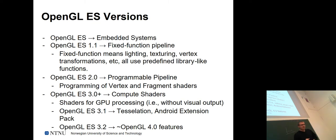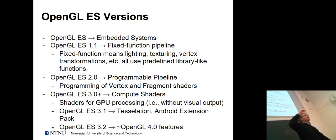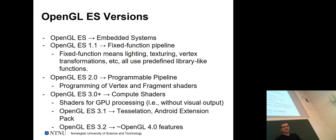With OpenGL ES 2, the programmable pipeline was introduced — pretty much what we just talked about — where you can inject little shader programs into the pipeline itself that are executed at runtime. And with OpenGL ES 3, compute shaders were introduced.